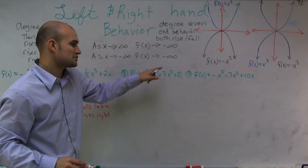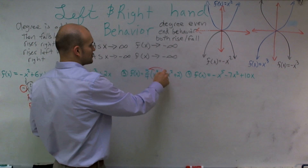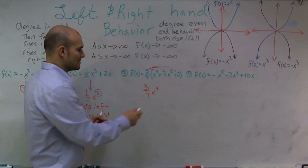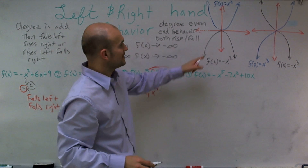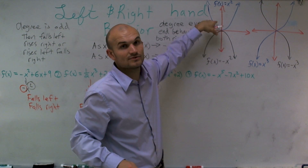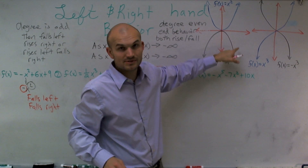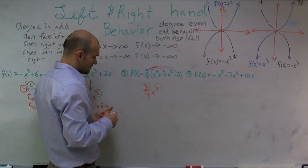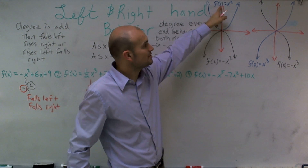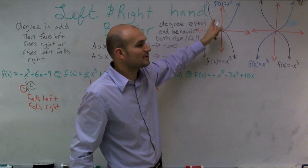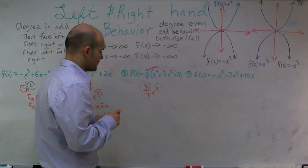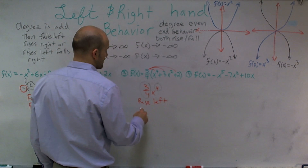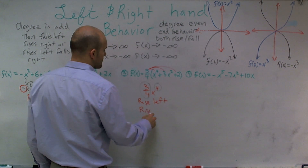For the next one, after applying the distributive property, what you get is three-fourths x to the fourth. The degree is even, so I know it's going to be either the parabola or its reflection. Looking at the leading coefficient, it's a positive number, so it's going to replicate f of x equals x squared end behavior. Therefore I can say it's going to rise left and rise right.